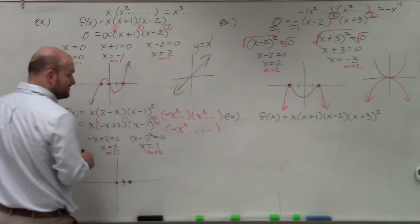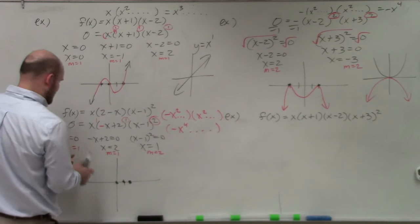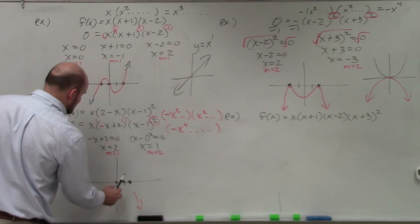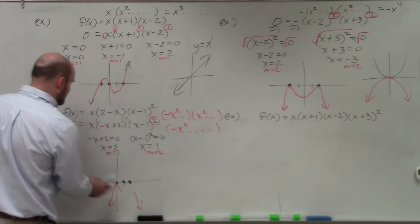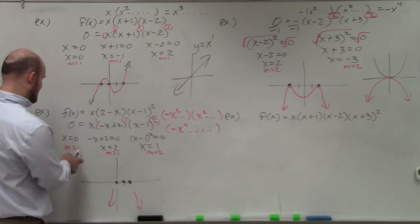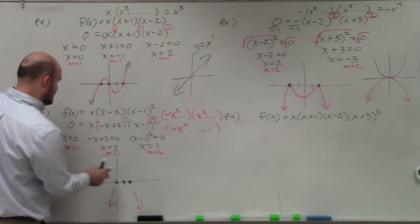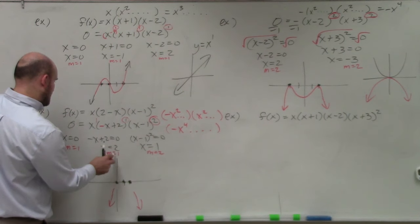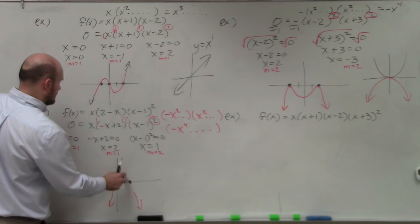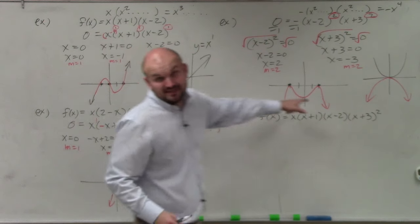The end behavior is fall left, fall right — the same as the previous example. But the zeros are different. The graph crosses at 0, bounces at 1, and crosses at 2. So the graph looks like that — it's different from the previous one. It's very important to understand how the zeros and multiplicity change the shape.